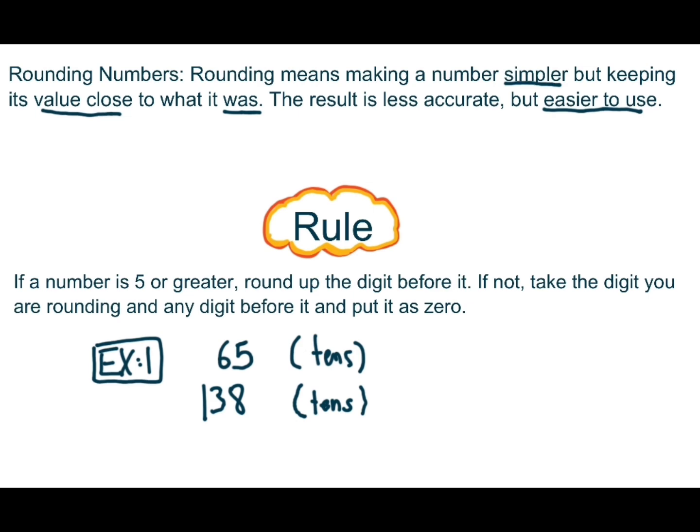Let's look at some examples. 65, rounding it to the tens digit. If we look back at the digit that we are rounding to, which is 5, it is 5 or greater. According to the rule, if a number is 5 or greater, we round up the digit before it. So, the answer is 70.